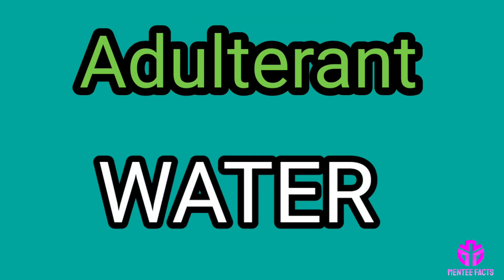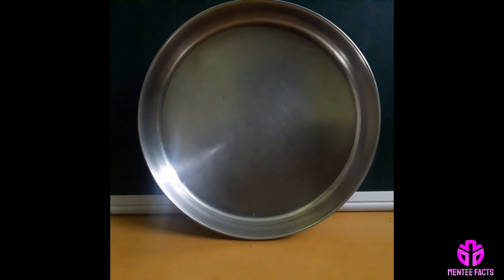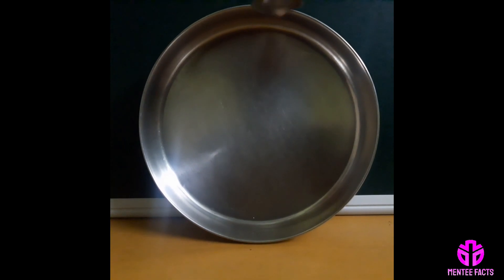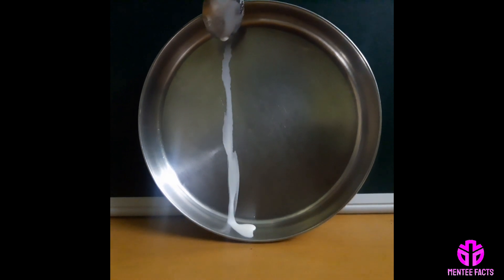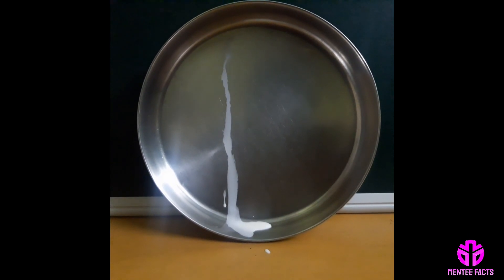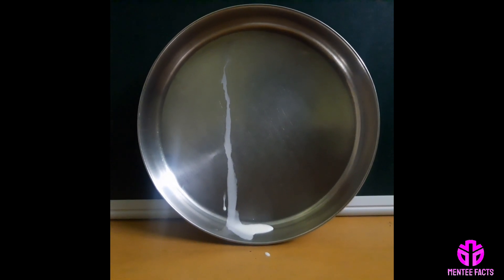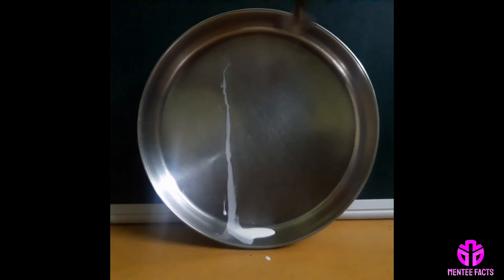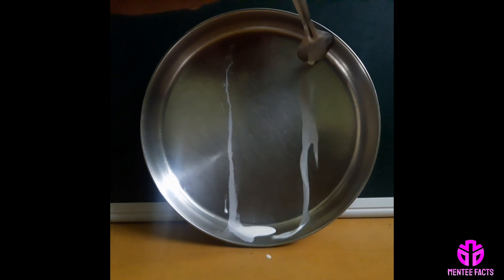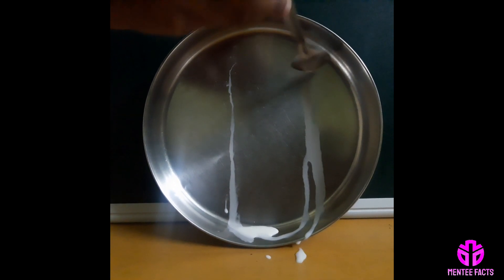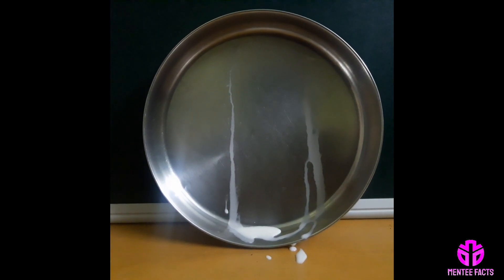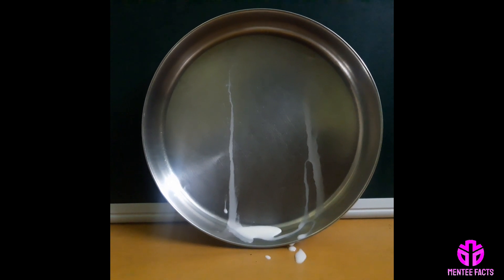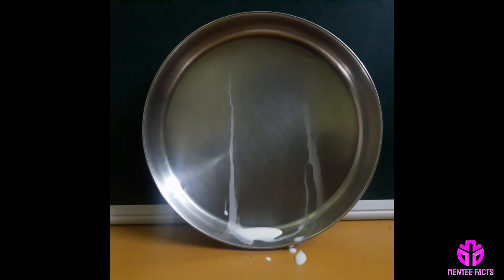The first adulterant is water. The presence of water can be detected by pouring a teaspoon of milk on a polished slanting surface — here we use a stainless steel plate. Pure milk flows slowly, leaving a white trail behind it. Adulterated milk flows immediately without leaving a mark.